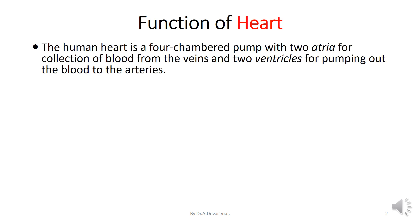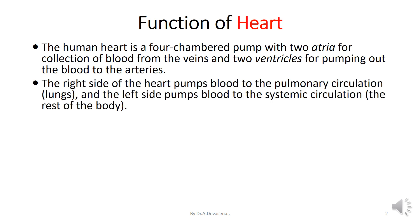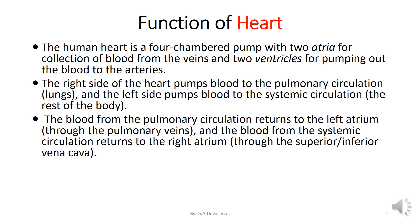The human heart is a four-chambered pump with two atria for the collection of blood from the veins and two ventricles for pumping out the blood to the arteries. The right side of the heart pumps the blood to the pulmonary circulation, i.e., to the lungs, and the left side of the heart pumps blood to the systemic circulation, i.e., to the rest of the body. The blood from the pulmonary circulation returns to the left atrium through the pulmonary veins, and the blood from the systemic circulation returns to the right atrium through the superior or inferior vena cava.